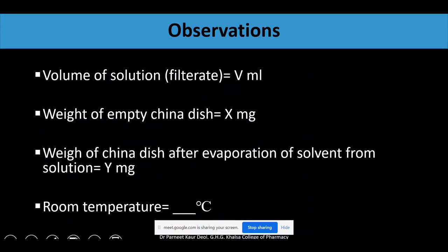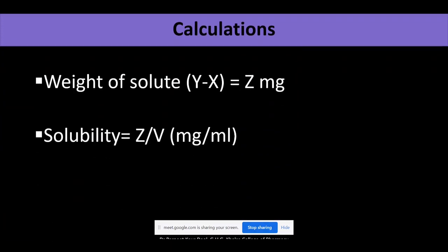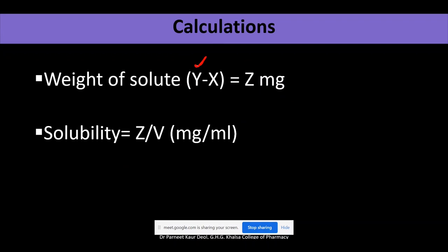In observation you will write down: volume of the solution which you filtered, that is V ml. Weight of the empty china dish is X mg. Weight of the china dish after evaporation of solvent from the solution is Y mg. Room temperature which I have recorded. The next thing will be your calculation: what is the weight of solute? Weight of my china dish with the solid solute minus weight of my china dish is the weight of my solute. Solubility is the weight of my solute divided by the volume which I have obtained, expressed as mg per ml.